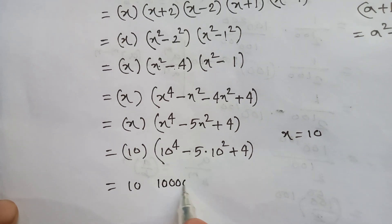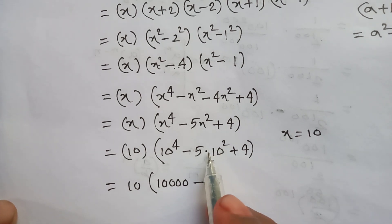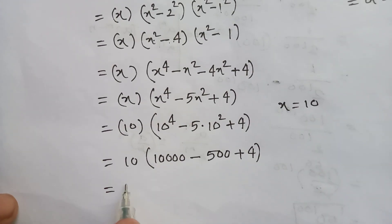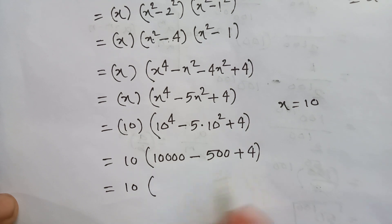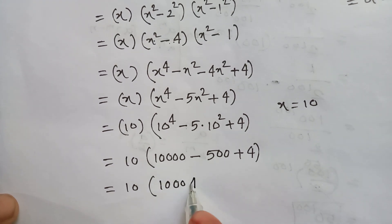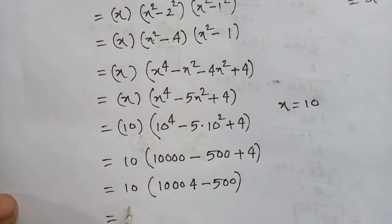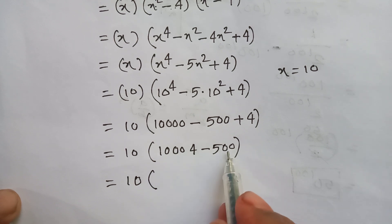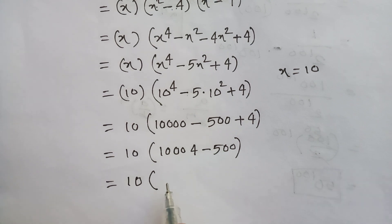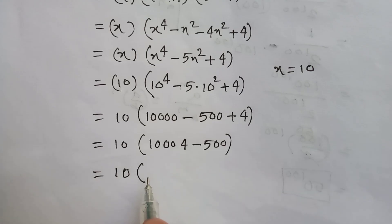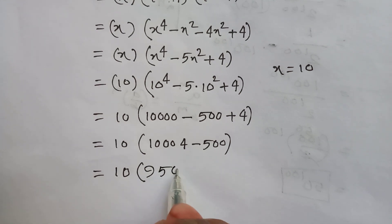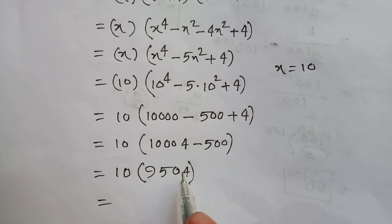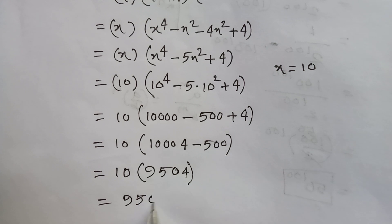Now substituting x equals 10: 10,000 minus 10 squared is 100, and times 5 is 500, plus 4. So 10 times 10,004 minus 500 equals 10 times 9,504, which is 95,040.